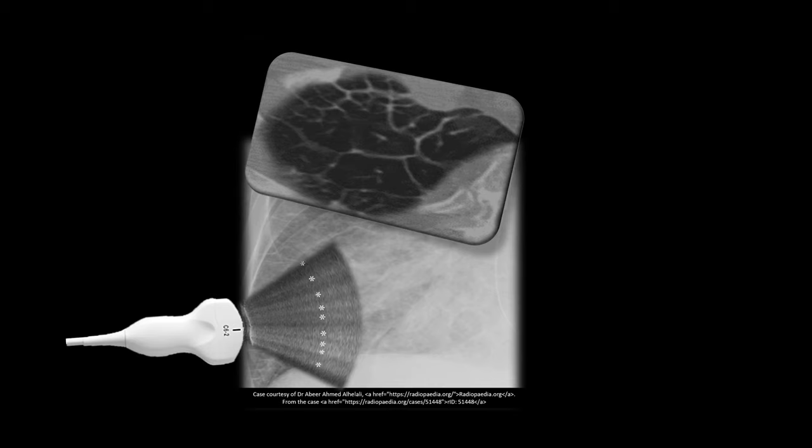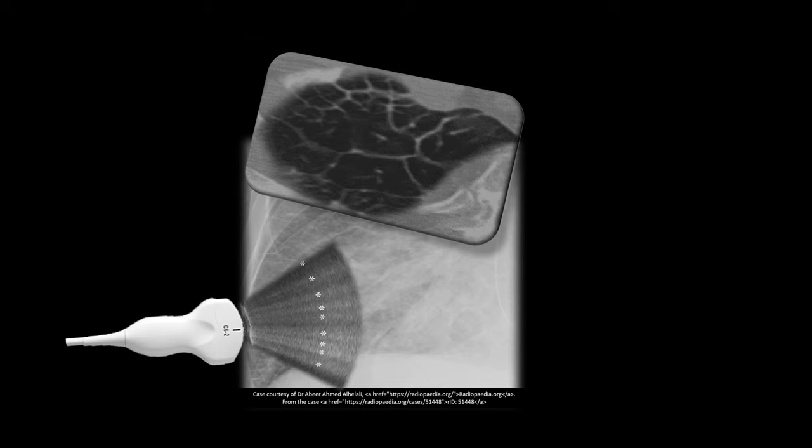To sum up, the main finding in the first phase of the cardiogenic pulmonary edema, called interstitial edema, will be the interlobular septal thickening.